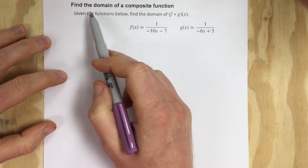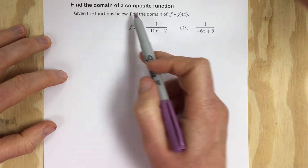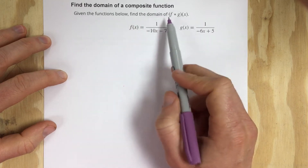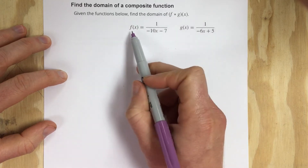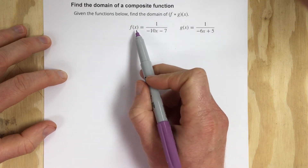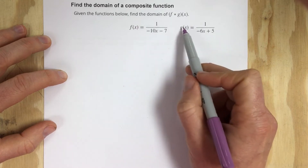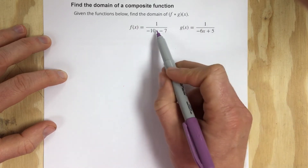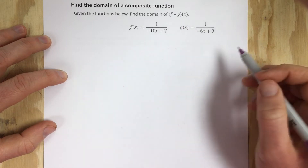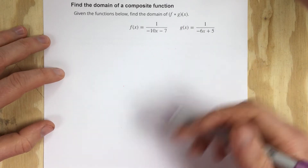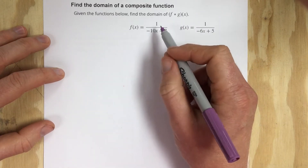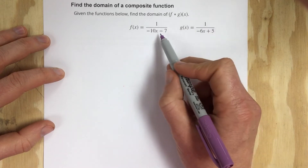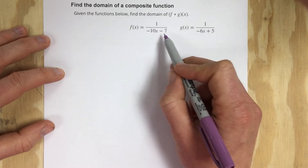In this video they want us to find the domain of a composite function. Given the functions below, find the domain of f of g of x. They give us f of x and g of x, and they want us to take g of x, plug it into f of x, and find the domain. The first way I like to start any problem with domain of composite functions is to find the domain of each function individually.